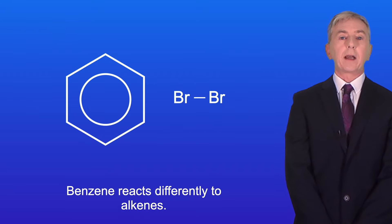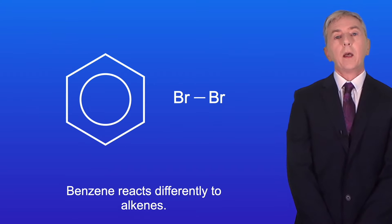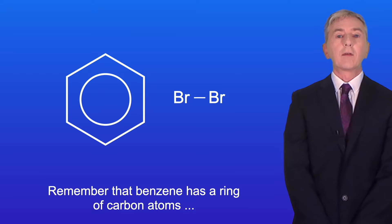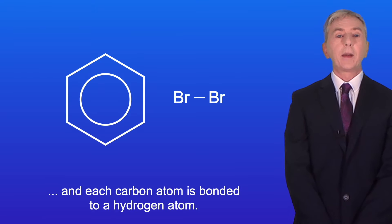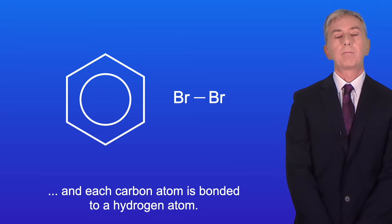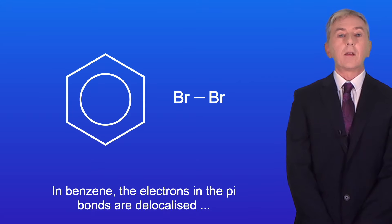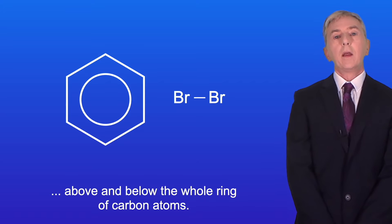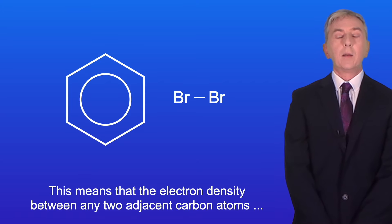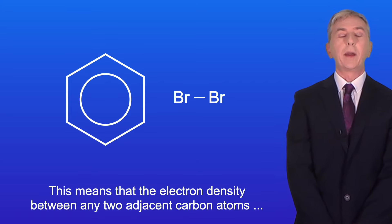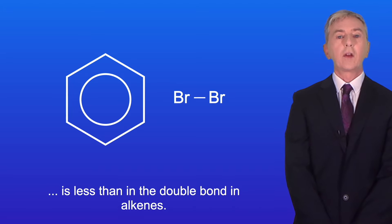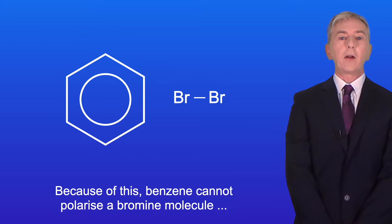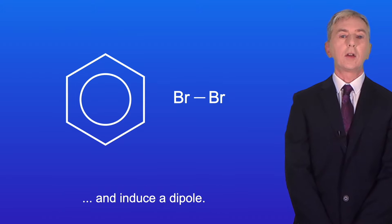Benzene reacts differently to alkenes. Remember that benzene has a ring of carbon atoms and each carbon atom is bonded to a hydrogen atom. In benzene, the electrons in the pi bonds are delocalized above and below the whole ring of carbon atoms. This means that the electron density between any two adjacent carbon atoms is less than in the double bond in alkenes. So because of this, benzene cannot polarize a bromine molecule and induce a dipole.